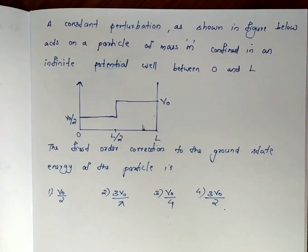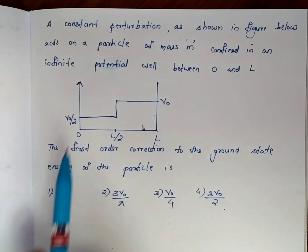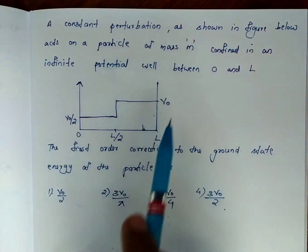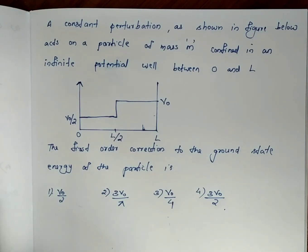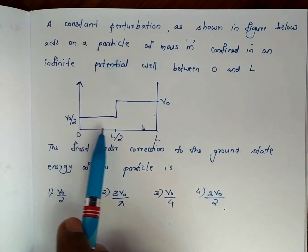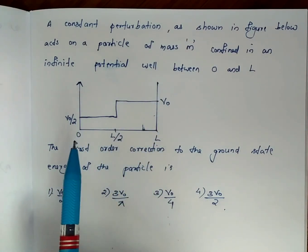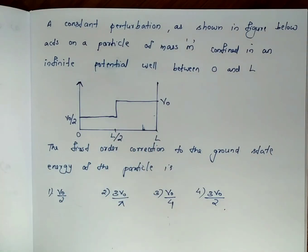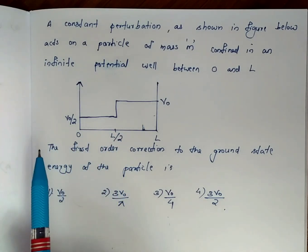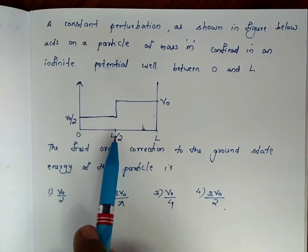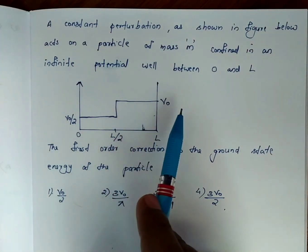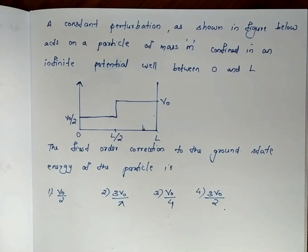Let's explain what perturbation means here. We have a potential well where the potential is 0 in the region 0 to L. From 0 to L/2 the potential value is 0, and from L/2 to L the potential has a modified value. That modification to the particle's energy is what we call a perturbation.